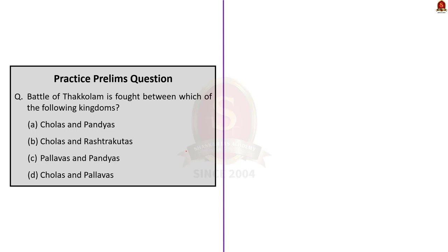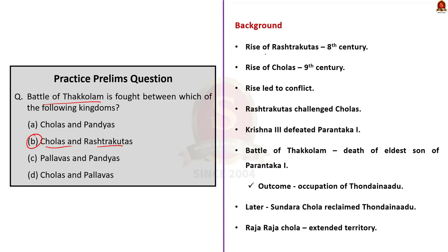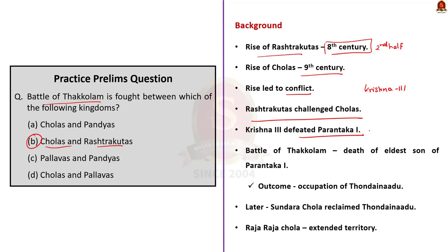Our next question is about the Battle of Thakolam, which recently came in news. It was fought between Cholas and Rashtrakutas — the correct answer is option B. Rashtrakutas emerged as a regional power in the second half of the 8th century, while Cholas emerged nearly a century later in the second half of the 9th century. Rashtrakutas, with their capital at Manyakheta, under the leadership of Krishna III, challenged the Cholas. In a series of battles, Krishna III defeated the Chola ruler Parantaka I. In the Battle of Thakolam, the elder son of Parantaka I, Rajaditya, was killed. As a result, Krishna III occupied the region of Tondainadu, previously under Chola control.